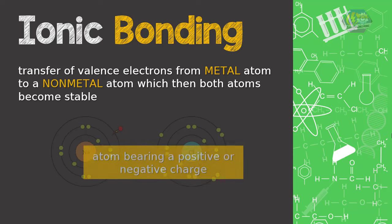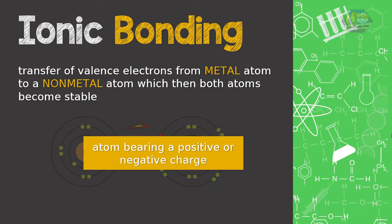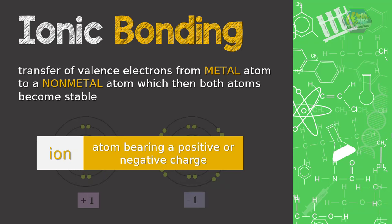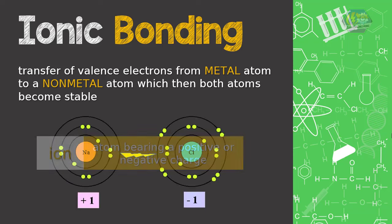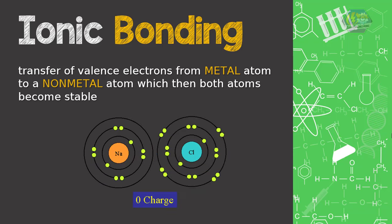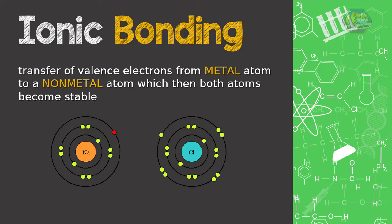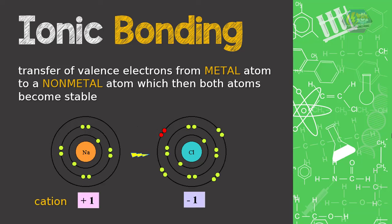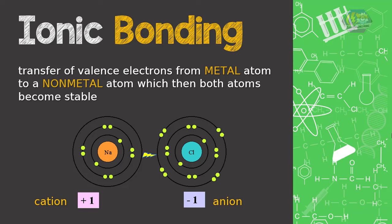Each atom bearing a positive or negative charge is called an ion. Because of the transfer of electrons, the metal atom has a net positive charge and the non-metal atom has a net negative charge. The ion that carries a positive charge is called a cation, while the ion that carries a negative charge is called an anion.